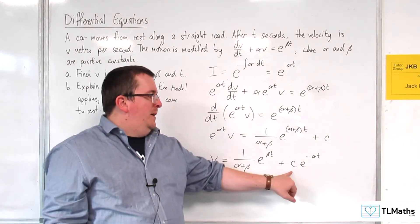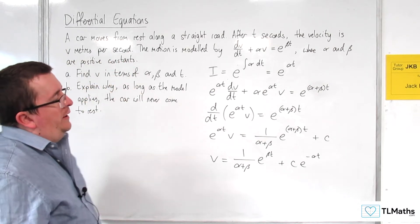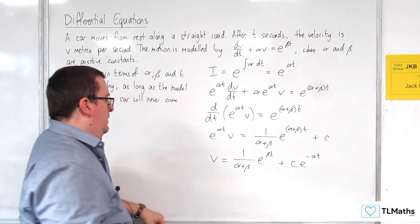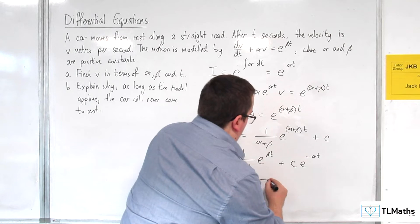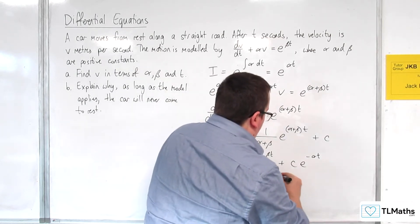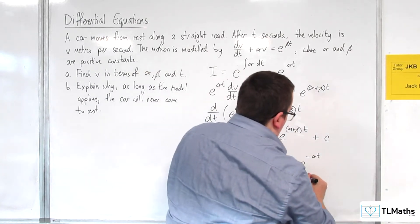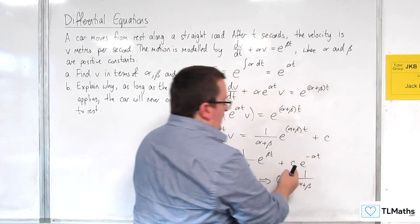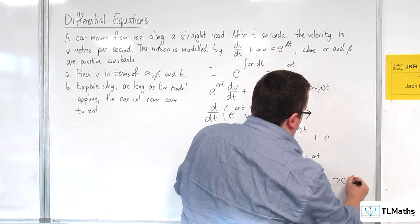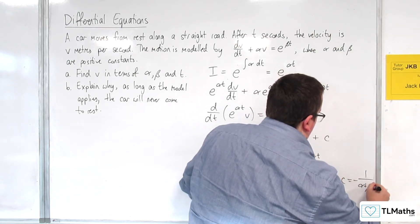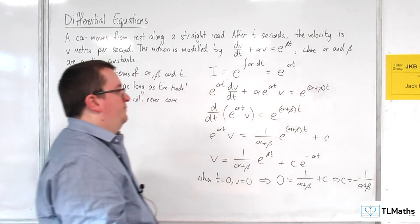I'd like to be able to work out c if I can. Now, I've been told that a car moves from rest. So that means when t is 0, v is 0. Substituting that in, I'm going to have 0 on the left-hand side. t is 0, so we have 1 over (α+β) and then c times e^0, so plus c. So that means that c is minus 1 over (α+β).